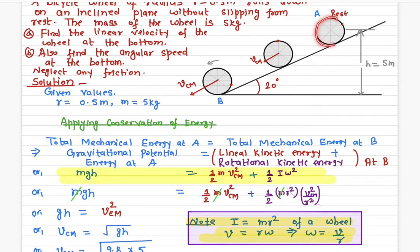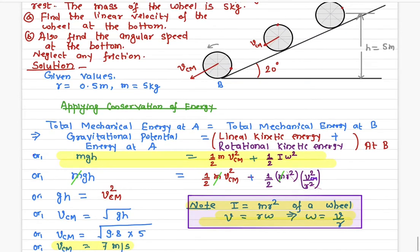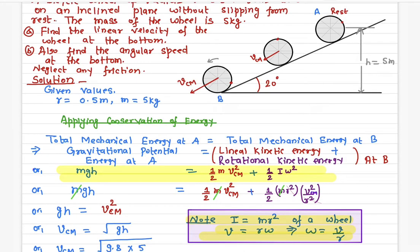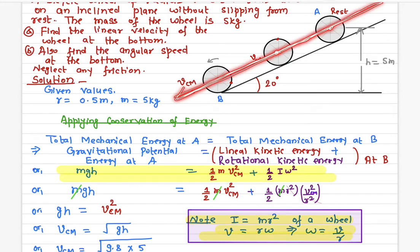The formula for gravitational potential energy is mgh, where m is the mass, g is the acceleration due to gravity, and h is the height — measured with respect to the center of mass. For the linear kinetic energy, the center of mass of the bicycle wheel is not rotating; it is simply moving in a straight line, so it has only linear kinetic energy.